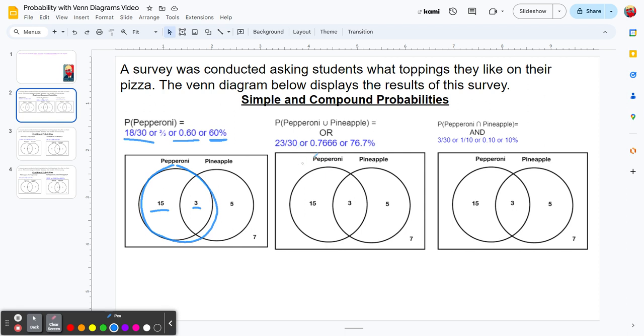The next one is a compound probability with OR - the probability someone prefers pepperoni or pineapple on their pizza. For OR, we use everything that's in pepperoni, so 15 and 3, and everything in pineapple, which is 3 and 5. We're not going to double count the 3 though, we count it once.